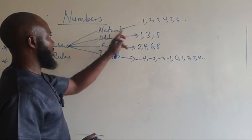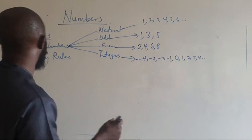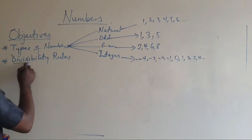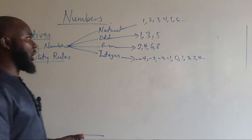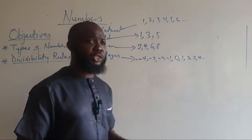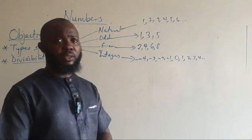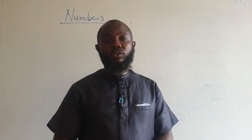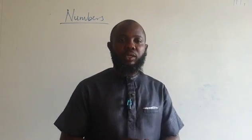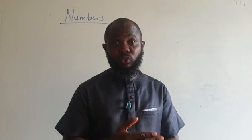So we may be able to differentiate between the types of numbers: natural numbers, odd numbers, even numbers, and integers. The next thing is to look at the rules of divisibility — how will you know that a number is divisible by another or not? Those are the ones to look at next. This is where we are going to stop in this video, so that it doesn't become too long. You just have to watch this video again to review what we have discussed.